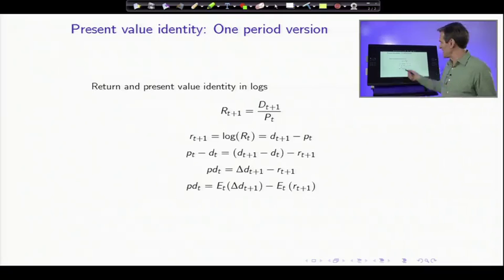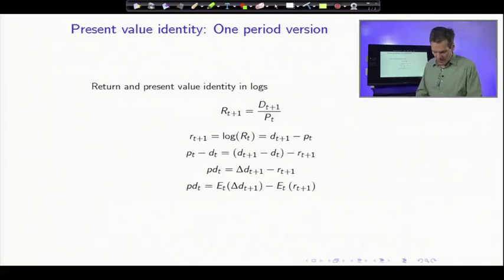And now it looks like a linearized present value formula. Prices are the present value of future dividends discounted by future returns. But it's linear, which makes it very useful and easy to use. Now remember, there's no content. The content comes from an economic model of expected return variation. It's just an identity, but it lets us see how the different pieces add up together. And it tells us a lot already.